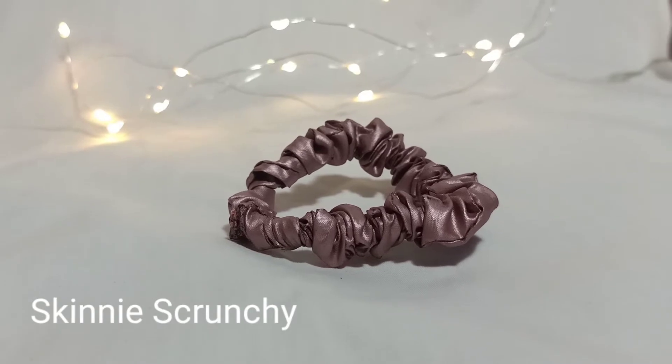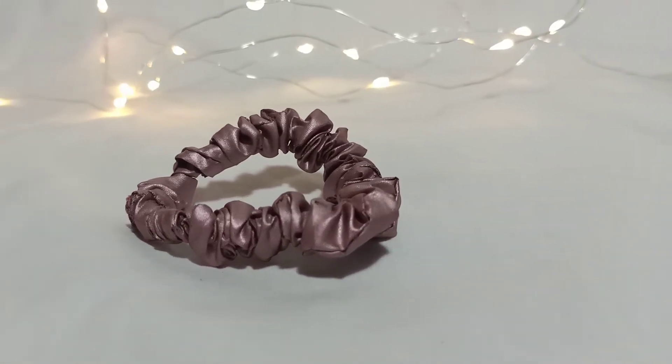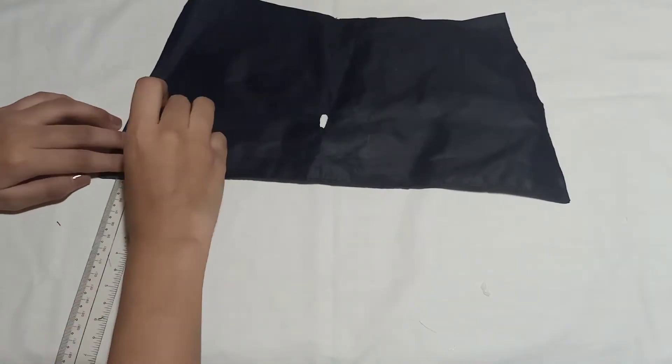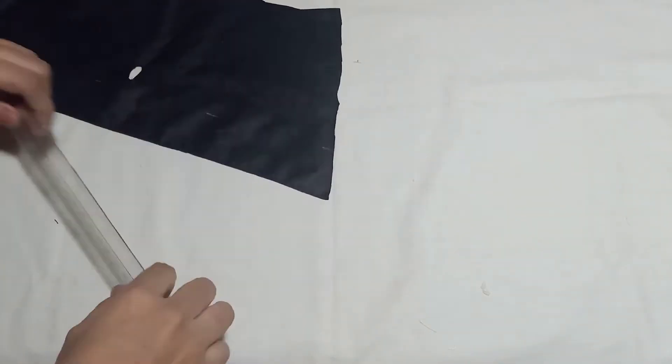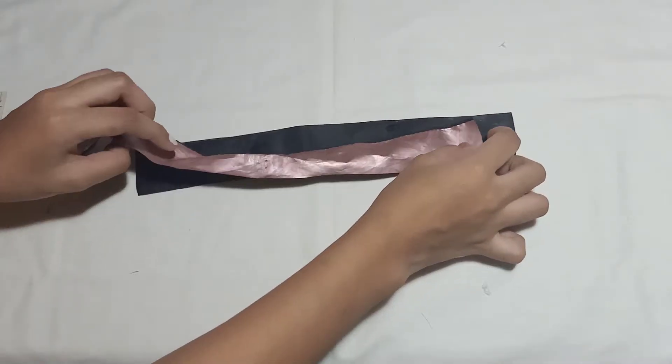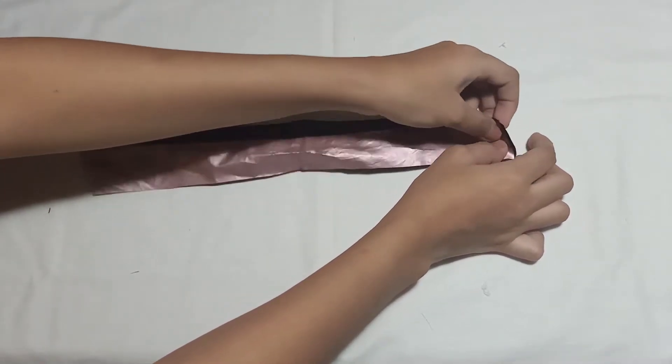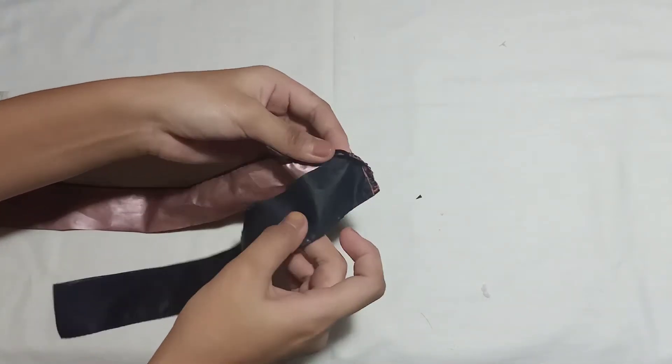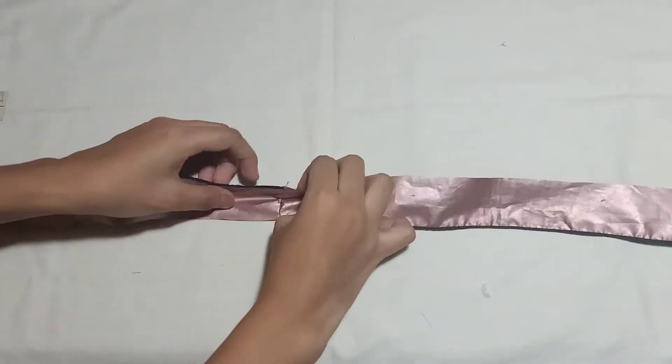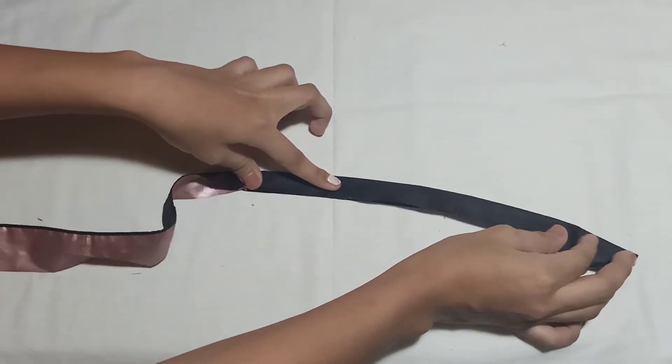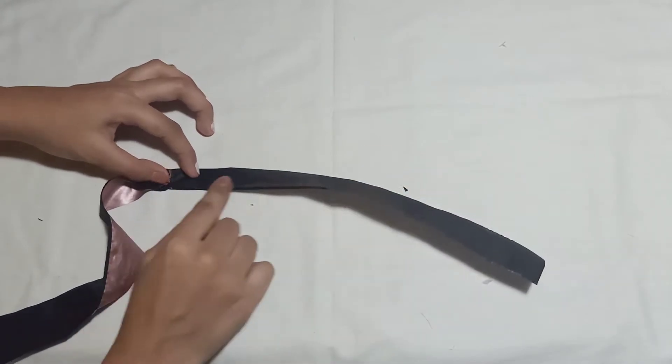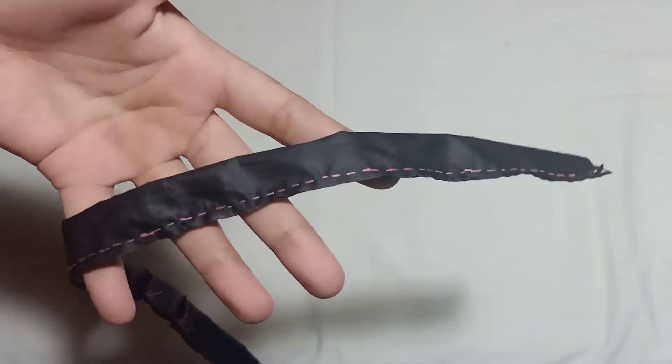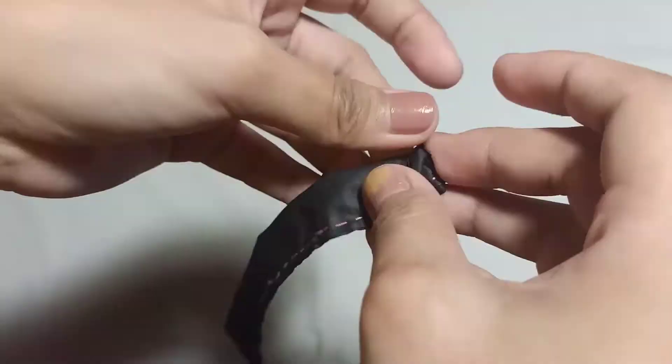Now let's move on to our third scrunchie, which is the skinny one. This is my favorite because I got it from an umbrella and it's like silk fabric. The width is only 1.5 inches. I connected the pieces because I wanted it long—when it's longer, it looks more wrinkled or ruffled. Then I folded it in half crosswise and used running stitch.